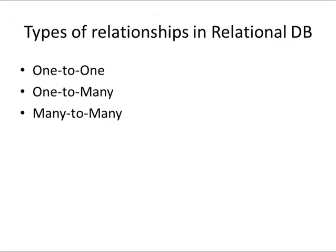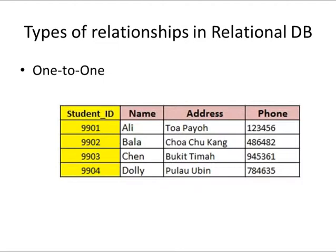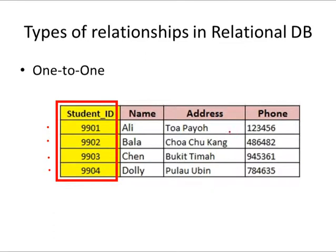Now we will talk about the types of relationships in a relational database. In general, there are three types: one-to-one, one-to-many, and many-to-many. An example of a one-to-one relational database is shown here, where the student ID is the primary key and each record is uniquely identified. There is no duplication of information — each piece of information is unique. This is an example of a one-to-one relational database.